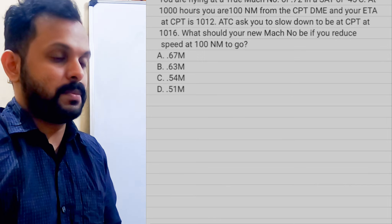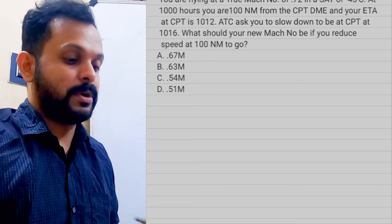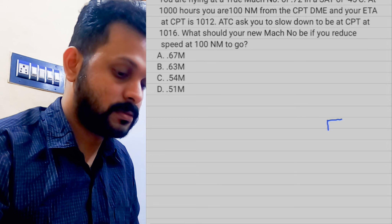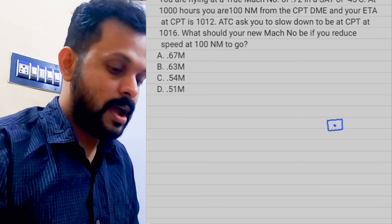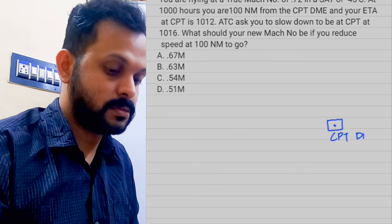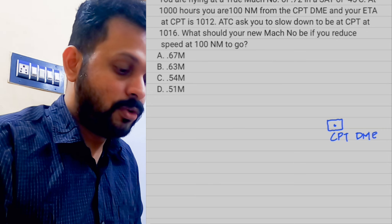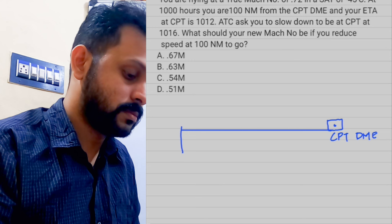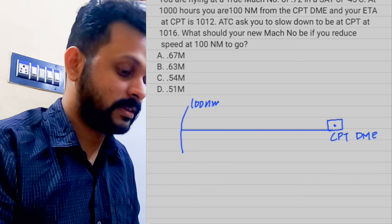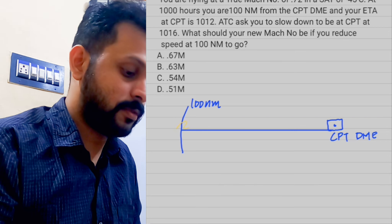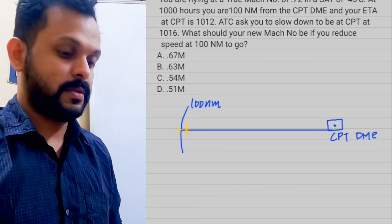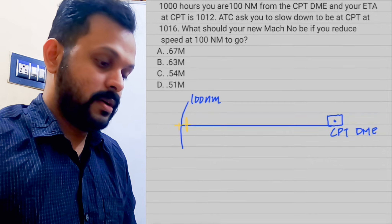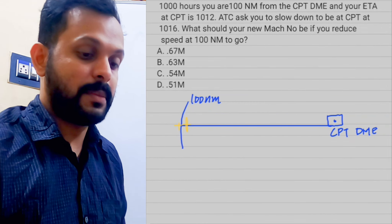This is a basic speed-distance-time question. Let's look at the scenario: you're flying from a point towards a particular DME. We have the DME here — the Charlie Papa Tango DME — and you are 100 nautical miles from the DME. This is a 100 nautical mile arc centered at the DME, and this is where the aircraft is.